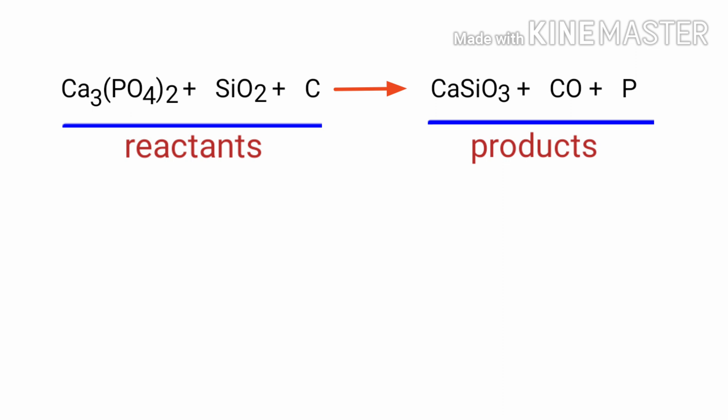In this equation, the reactants are calcium phosphate, silicon dioxide, and carbon. The products are calcium metasilicate, carbon monoxide, and phosphorus.